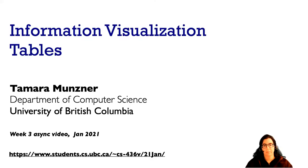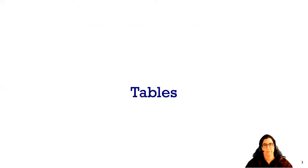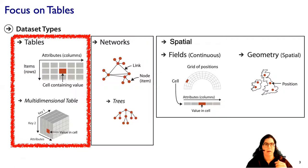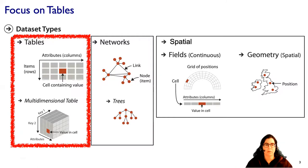Welcome to week three. Today we're going to cover tabular data. When we talked about data abstractions there were three major forms of data: tabular data, network and tree data, and spatial data. Today we're going to focus on tabular data.